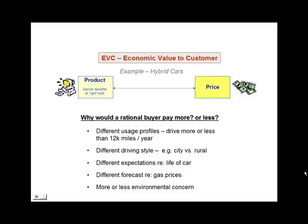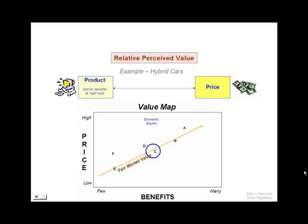Let's put that in the context of our value map. A value map relates the perceived benefits that products deliver along the horizontal axis — many down to few — and price as perceived by customers along the vertical axis from low to high. When you look at products in the marketplace at a specific point in time, you would expect a relationship between the perceived benefits — magnitude and nature — and the price. We depict it in this example as being linear, but there's no reason it necessarily needs to be; it's just a simplification for discussion.